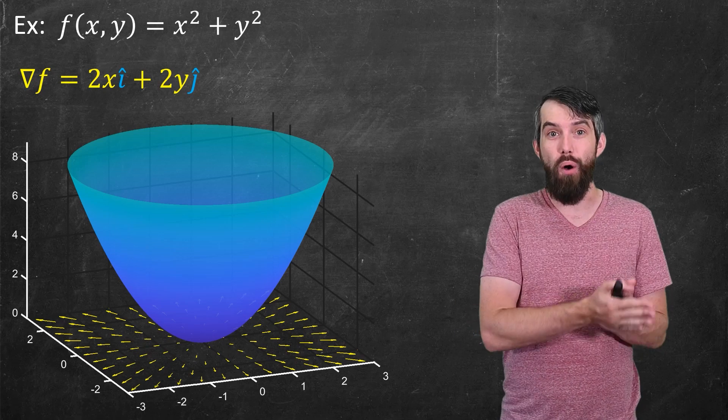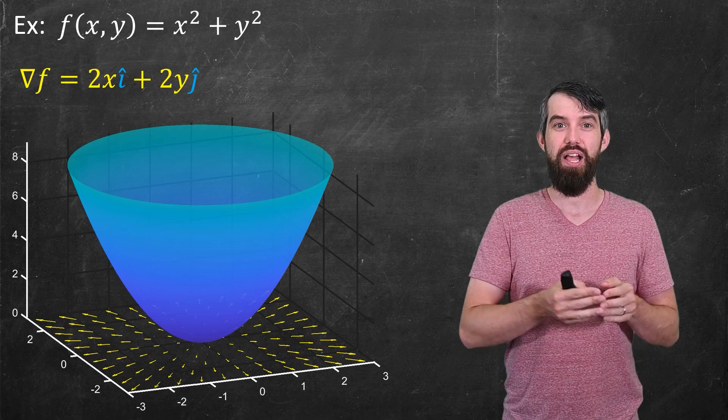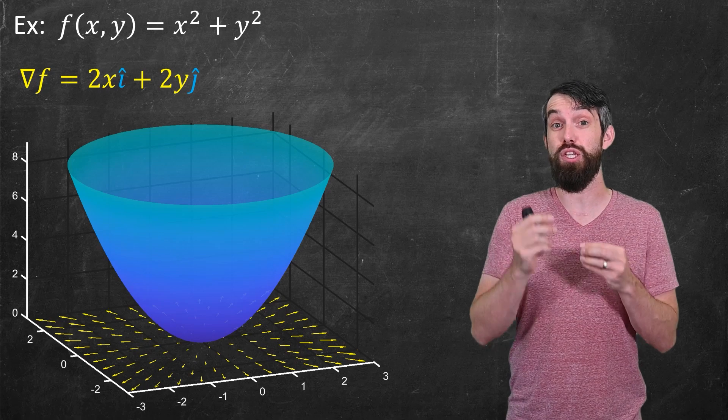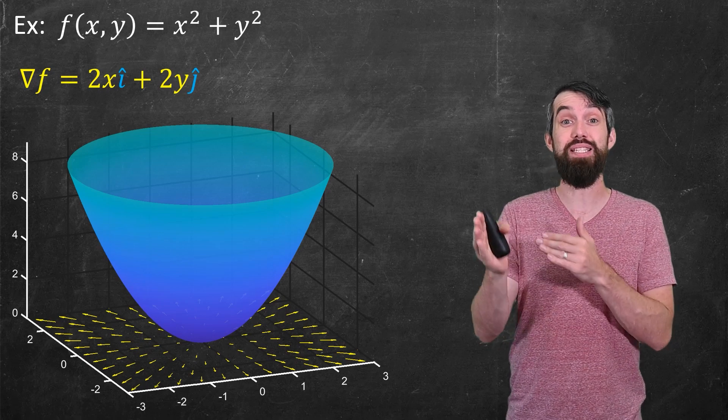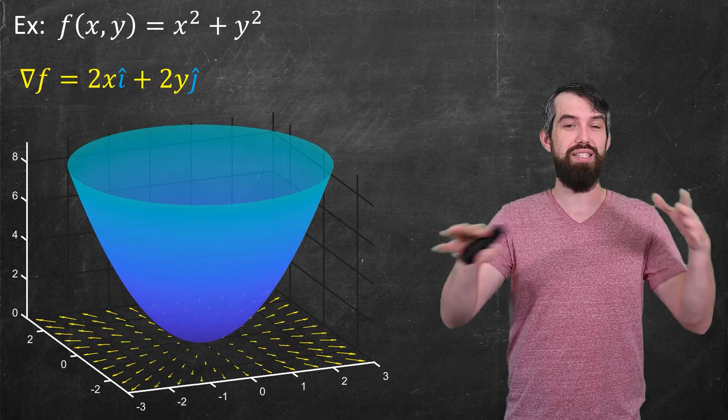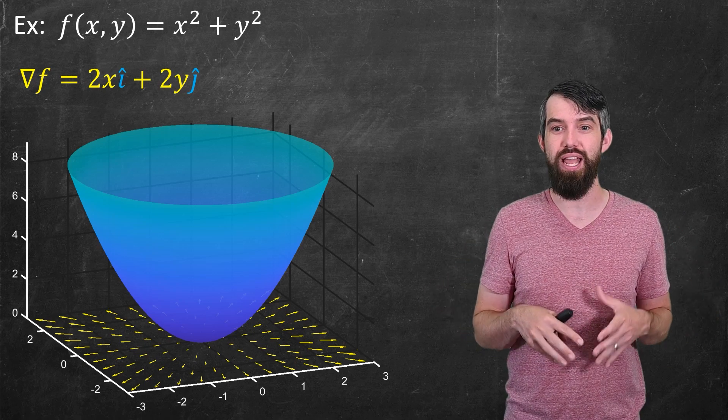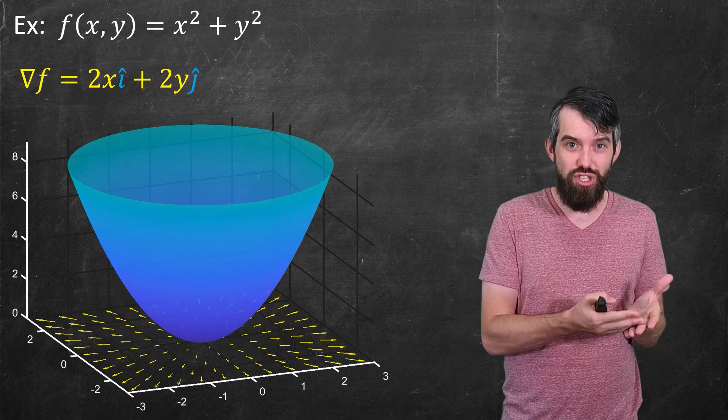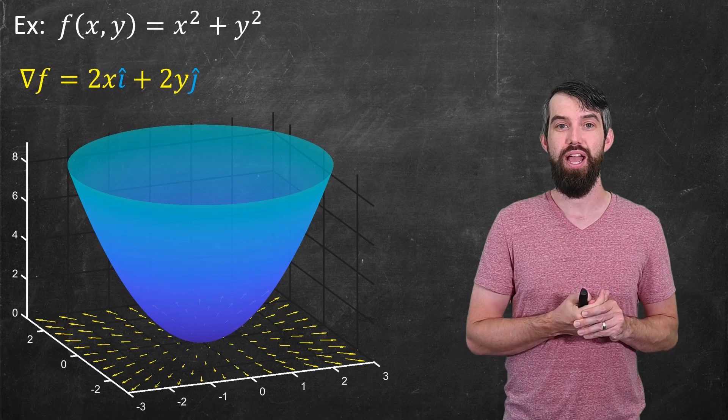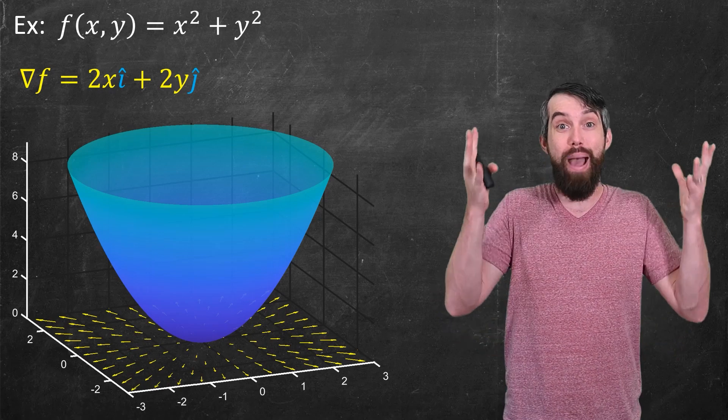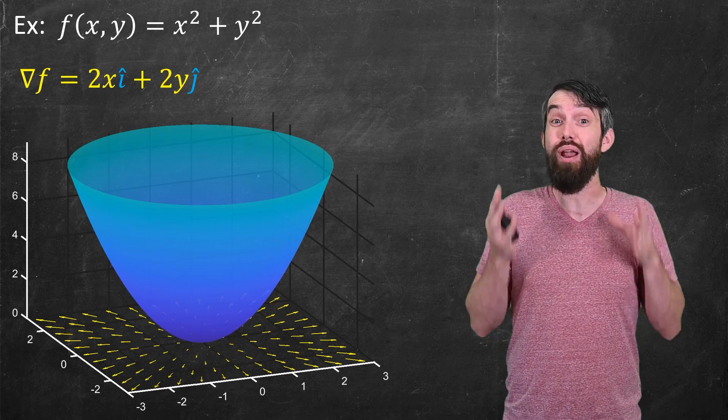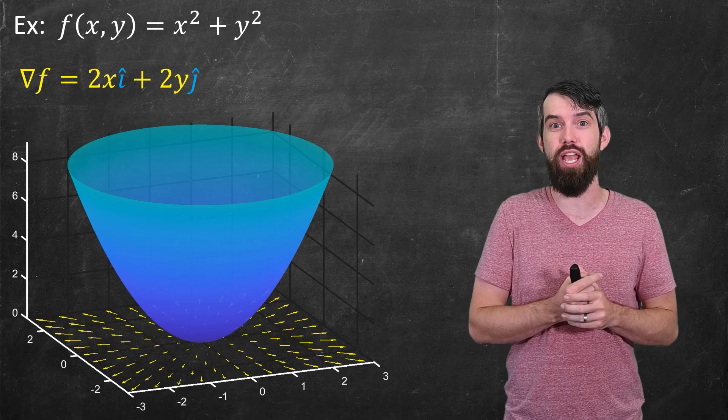And as you might recall from multivariable calculus, the gradient vector points in the direction of steepest increase of your function. So, if you're at some particular x and y coordinate, and you're up there on the function value at that x and y coordinate, and you want to know, how do I climb this mountain represented by this function as fast as possible? Where is this function steepest? What direction should I go? You should go in the direction of the gradient.